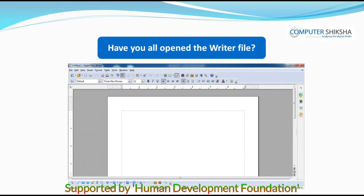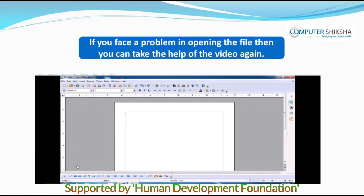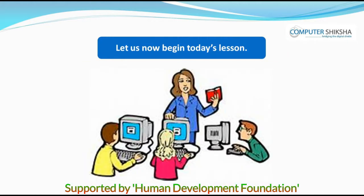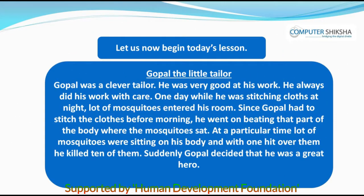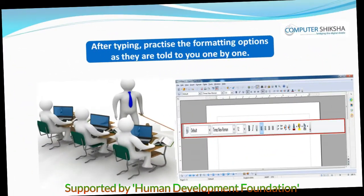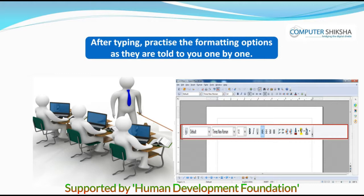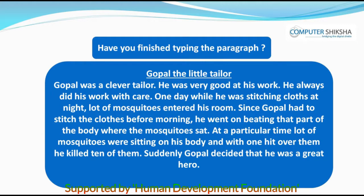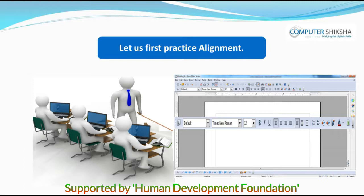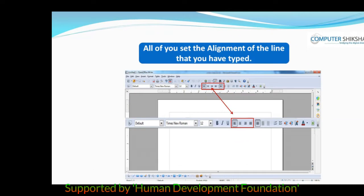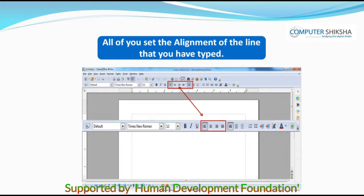Have you all opened the writer file? If you have not been able to open the file, look at the video again. Let us now begin today's lesson. Look at the paragraph in front of you and type the same on your writer page. After doing this, practice the formatting options as they are told to you one by one. Have you finished typing the paragraph? Let us first practice alignment. All of you set the alignment of the line that you have typed and also share what happens with each of the different alignment options.